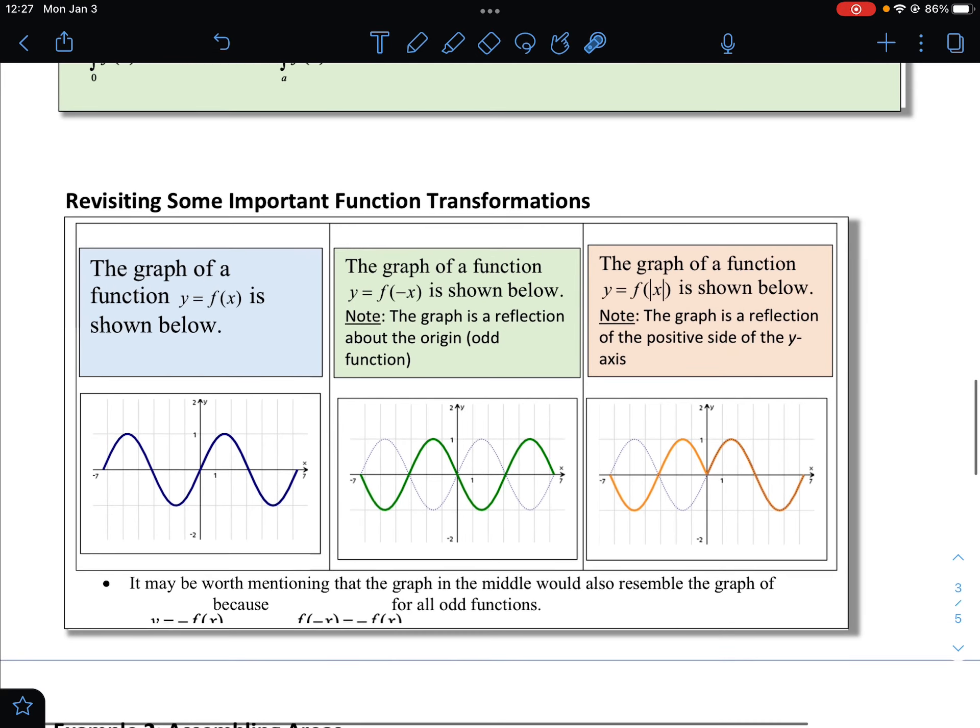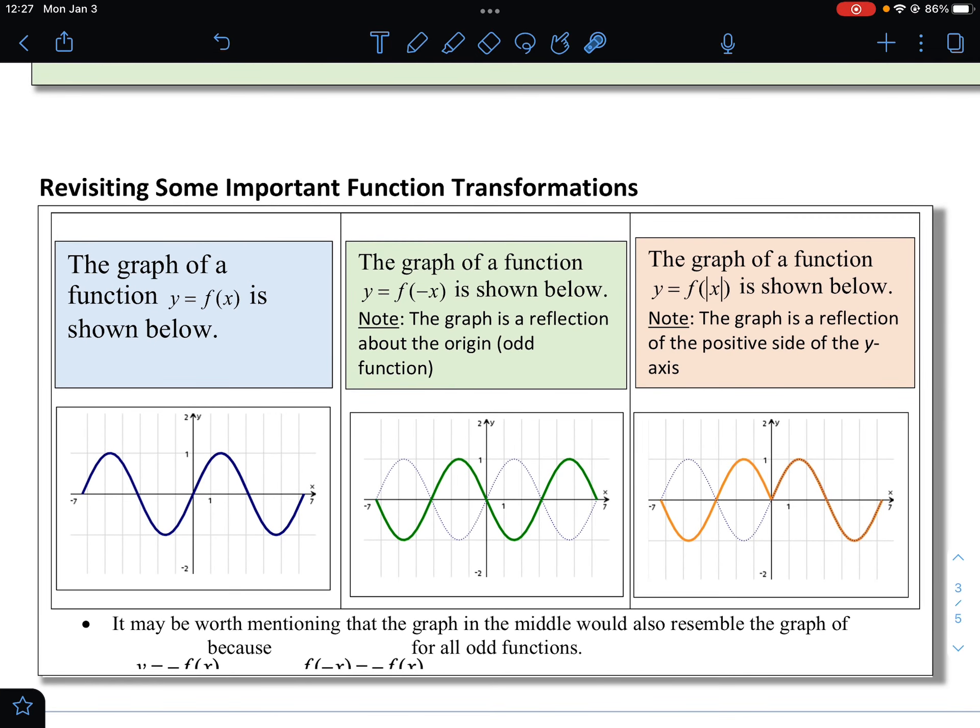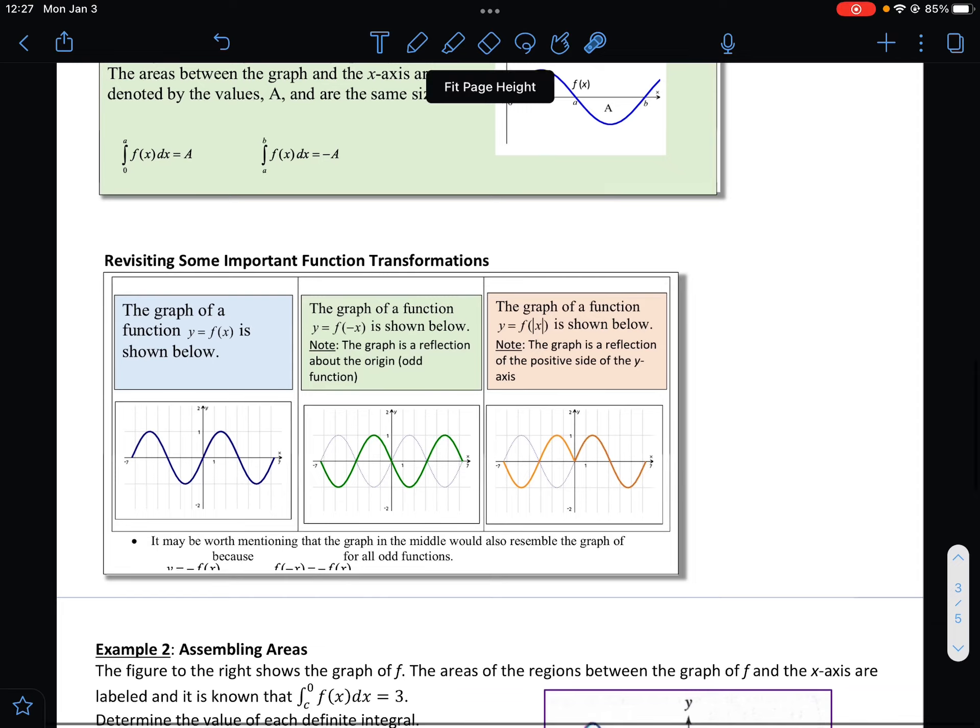And here we just have a couple different transformations that we've looked at probably in your pre-calculus course. This is the function f here. If we have f of negative x, that's simply going to be some type of reflection. And if we have f of the absolute value of x, we have the graph as a reflection on the positive side of the y-axis there. Some things might come in handy in the future.